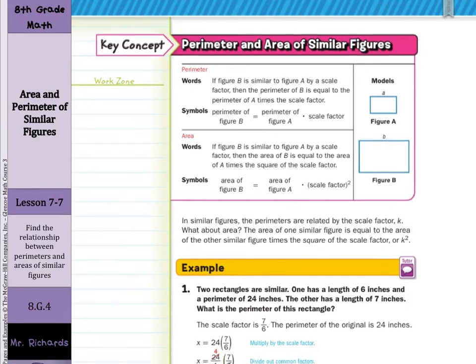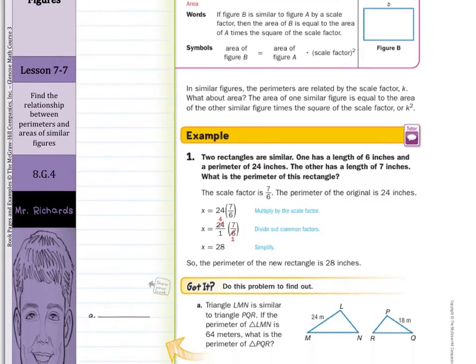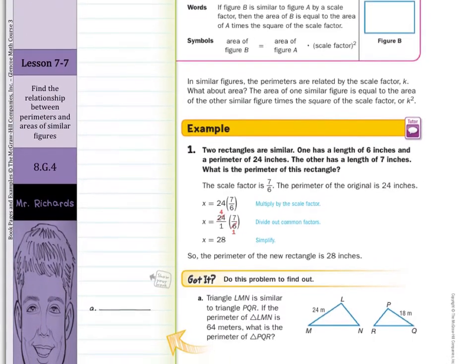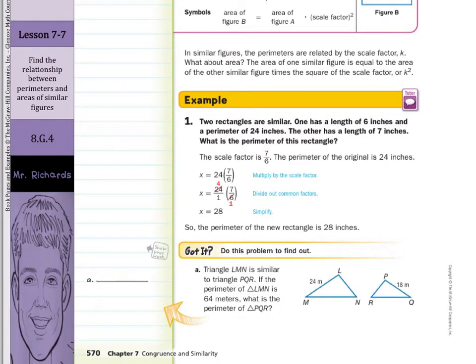In our first guided example, two rectangles are similar. One has a length of 6 inches and a perimeter of 24 inches. The other has a length of 7 inches. What is the perimeter of this rectangle? Well, the scale factor is 7 sixths. And how we can look at that, if we have two similar rectangles, we have one rectangle that has a length of 7. We have one rectangle that has a length of 6. So we can say that the scale factor is 7 sixths, since they're declared similar. Well then, the scale factor is 7 sixths. We multiply that by 24, and we get an answer of 28.